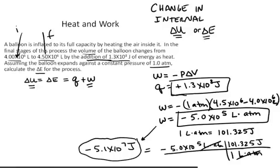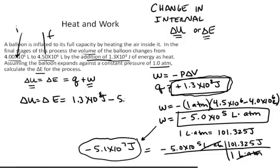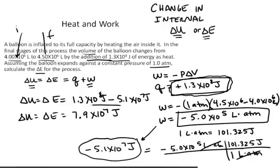And we already had it for Q. We just need to put these two numbers into this calculation. So ΔU, which is the same thing as ΔE, equals 1.3×10⁸ joules minus 5.1×10⁷ joules. The change in internal energy equals 7.9×10⁷ joules.